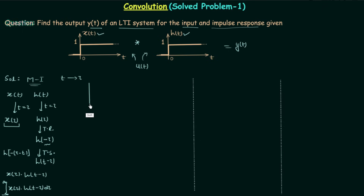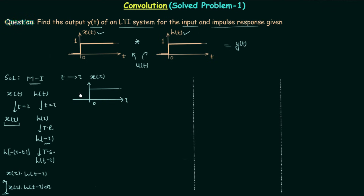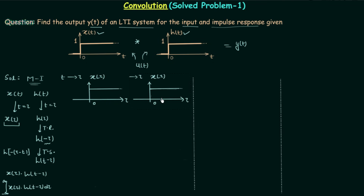In step 1 we replace t by τ. We plot the waveform of x(τ), which is the unit step. Signal h(τ) has the same waveform, so we copy and paste it. Both waveforms are the unit step signal, so we are done with step 1.